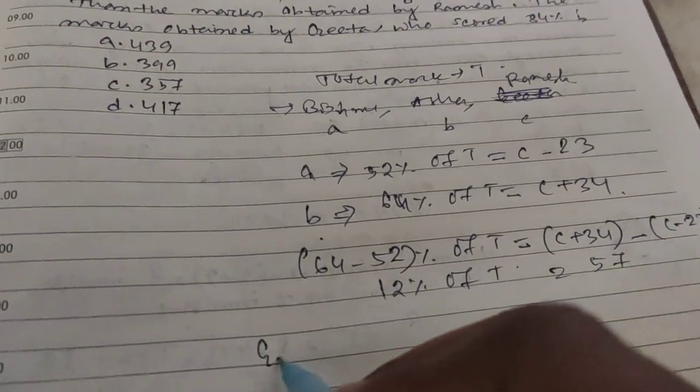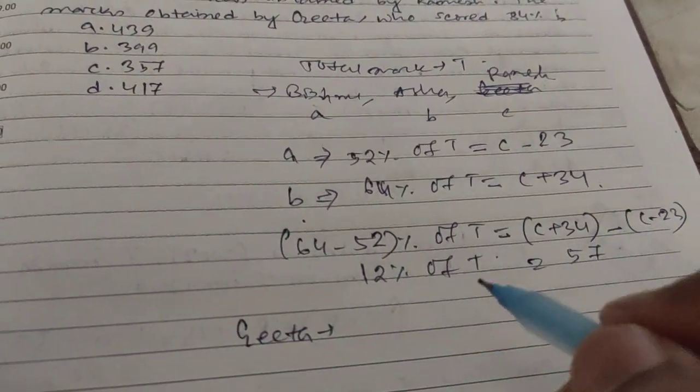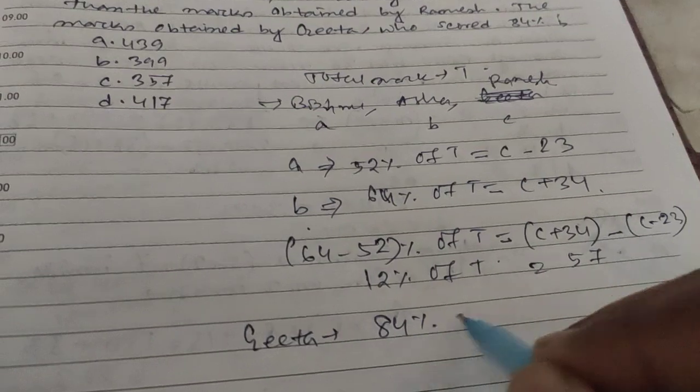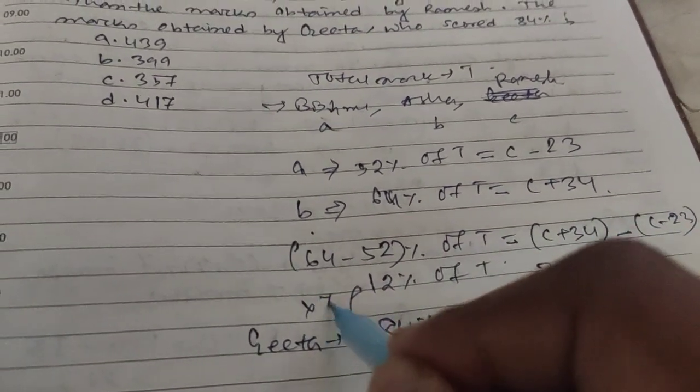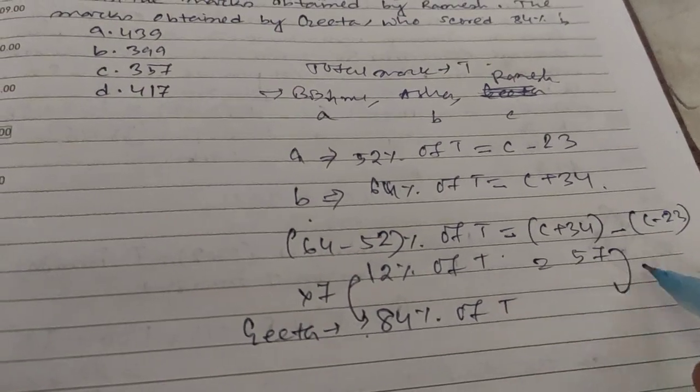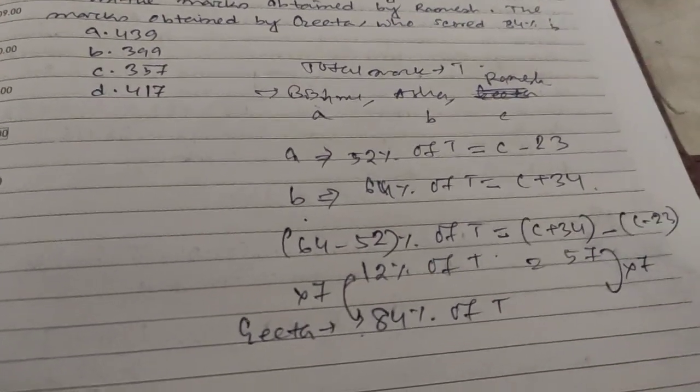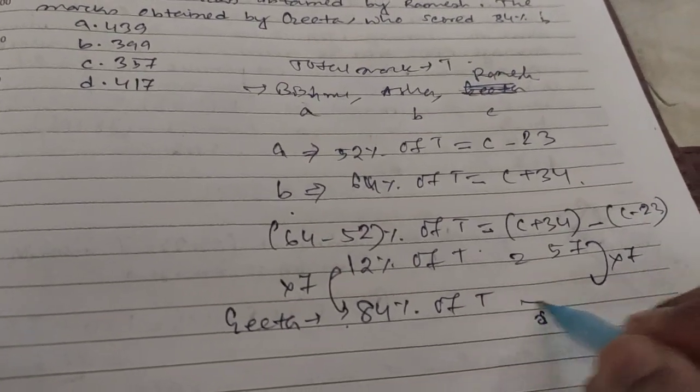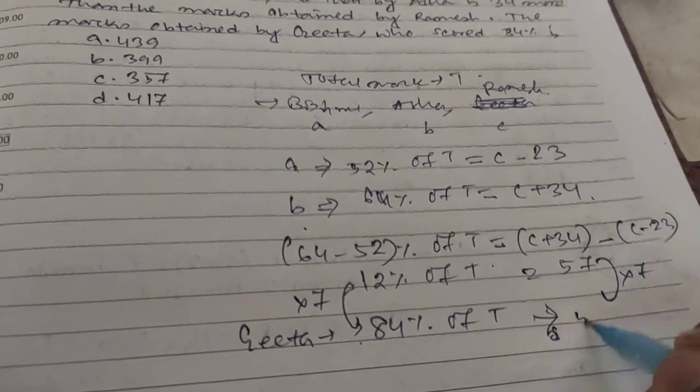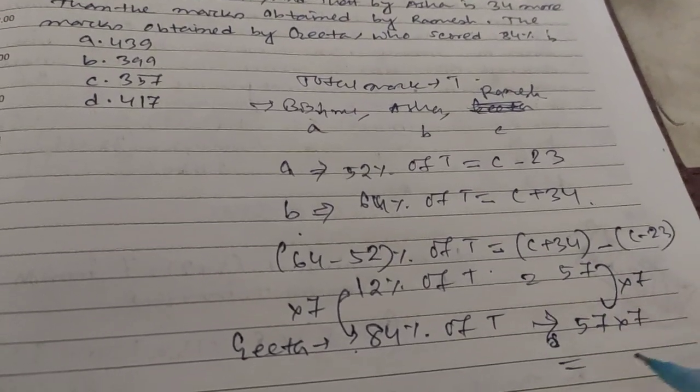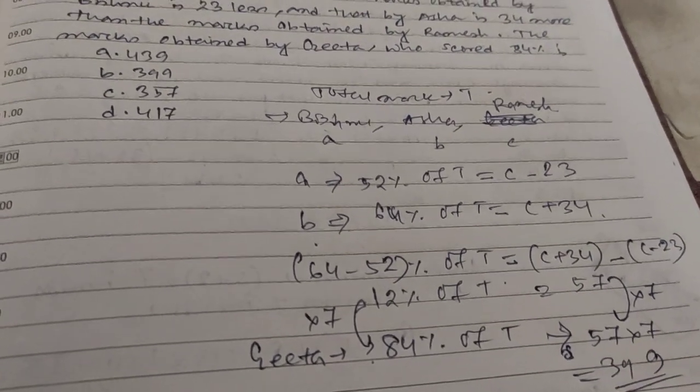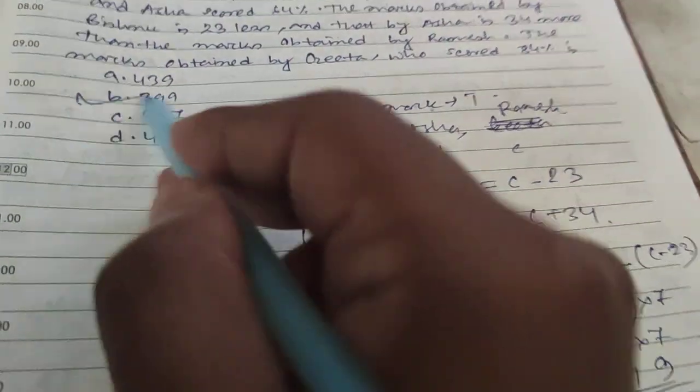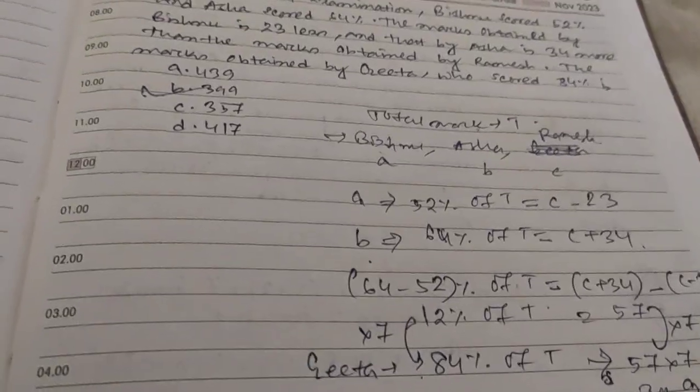And for Gita, Gita scored 84 percent which is seven times 12 percent. So this will be seven times also, so Gita's score should be 57 times 7, which is 399. So B will be the right choice.